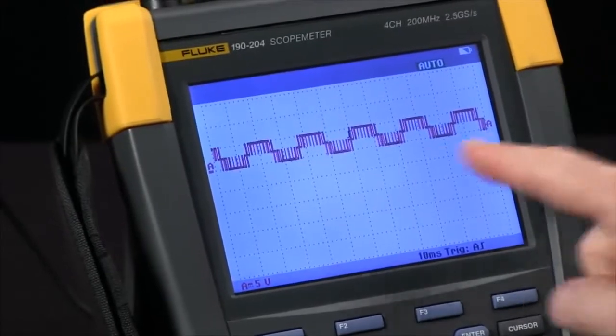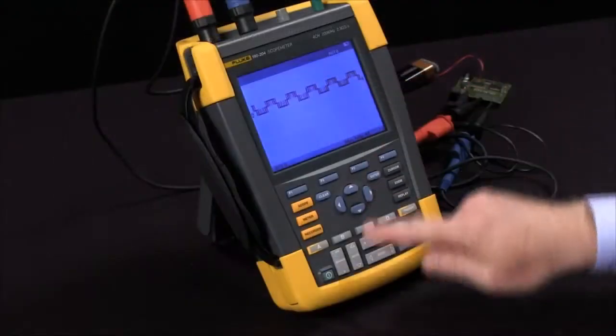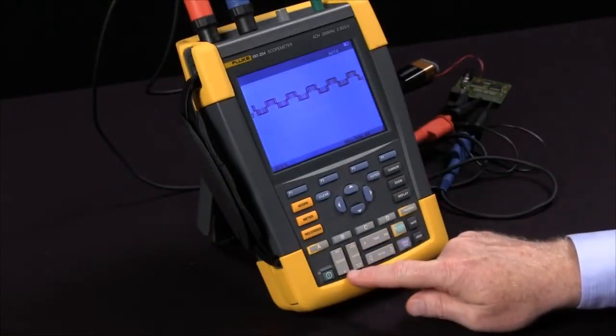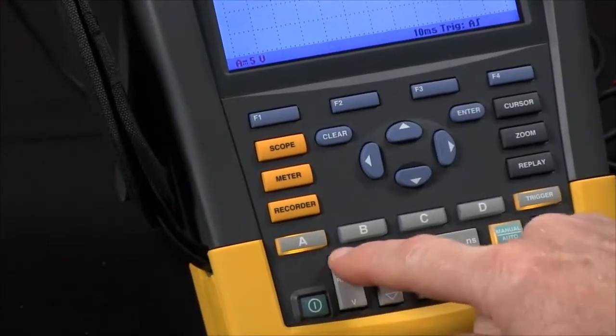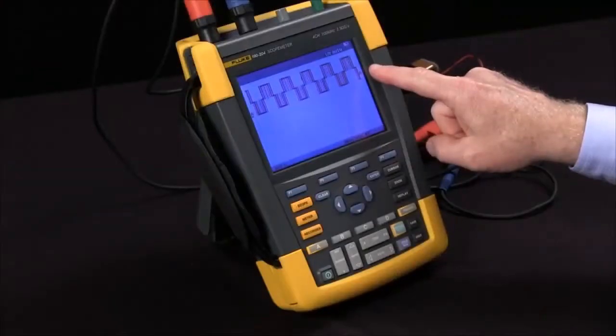I'm going to start off by changing my volts per division for channel A. I've got the rocker switch down here. Right now we're set for 5 volts per division. Hit the top end of this for millivolts. We change to 2. We've got a bigger display.